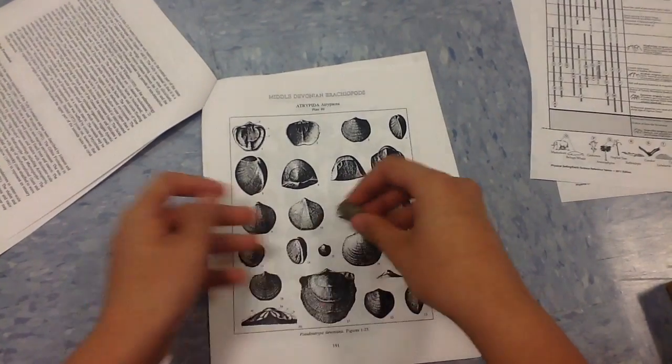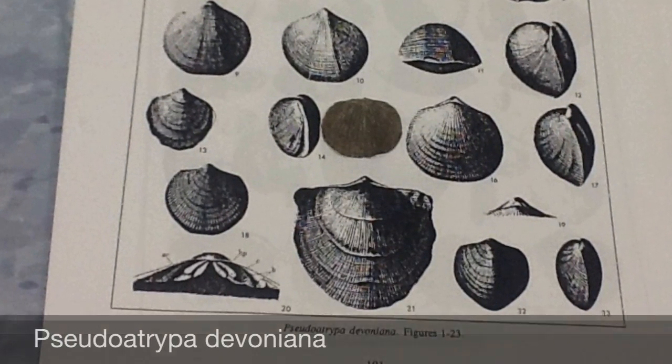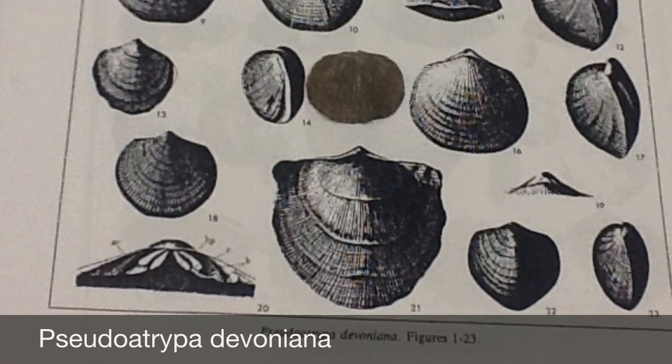Note that some fossils come in various forms. We identify this fossil as Pseudotrypa devoniana.